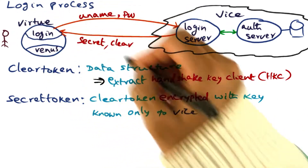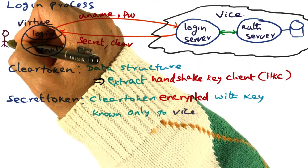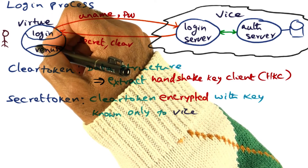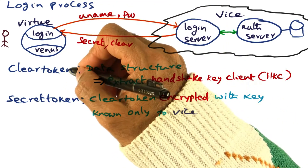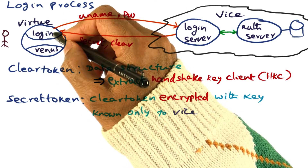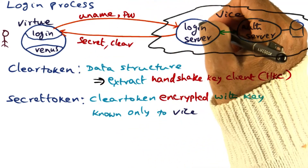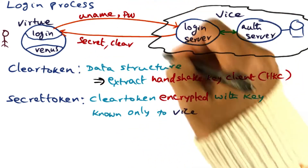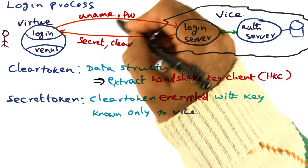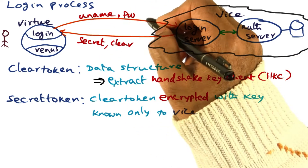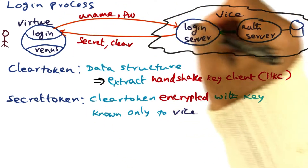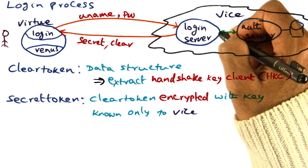Let's first understand how the login process works. You walk up to a workstation and you log in using your username and password. This login process is special — it runs on the Virtue workstation and communicates with the login server inside Vice by presenting the username and password in a secure fashion. It presents the username and password securely over the insecure links to the login server.